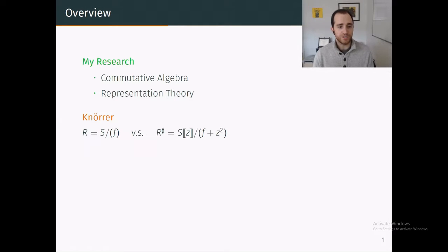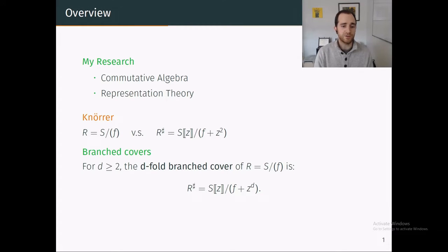With Knörrer's theorem as a primary motivator, I have studied what I like to call the d-fold branched cover, where instead of f plus z squared, I'm considering the hypersurface defined by f plus z to higher powers.